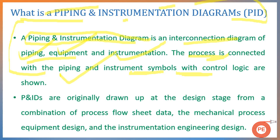It is a complete package showing how your plant will look and how your plant will work. P&IDs are originally drawn at the design stage. The basic document prepared when engineering of a process is started is your process flow diagram, and after that PFD is frozen, we go for the piping and instrumentation diagram. It is a combination of the process flow data sheet (PFD), mechanical process equipment design, and instrumentation engineering design — the basic document after which detail engineering of a process starts.